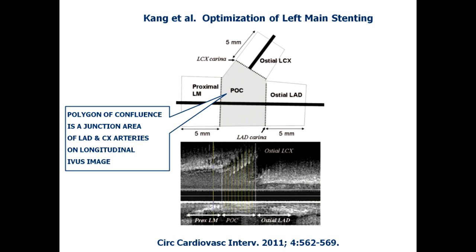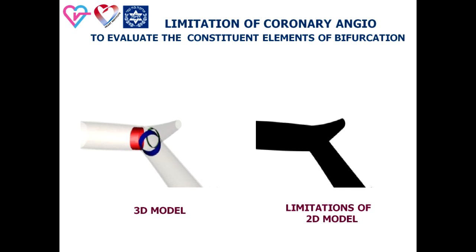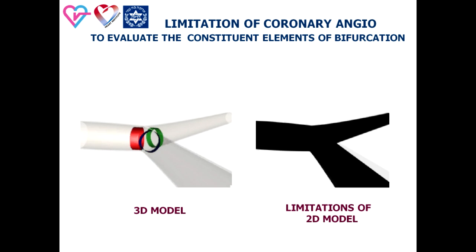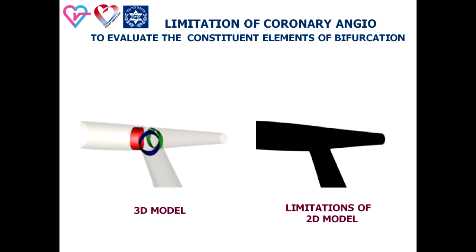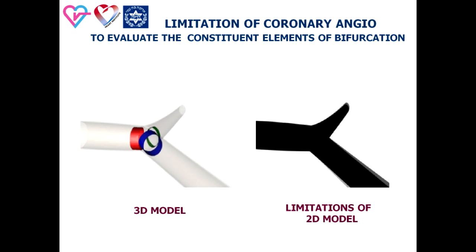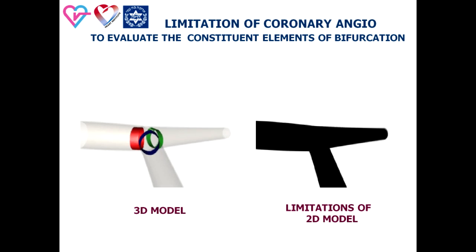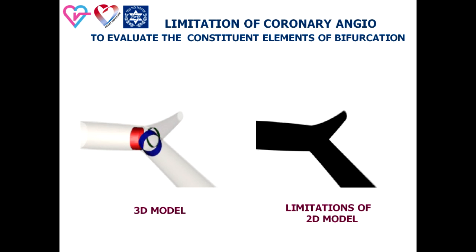The polygon of confluence is an anatomical area including the bifurcation of the distal left main and the branch osteo-segments of the arising main branches. This area is a complex geometrical space that can only be partially evaluated by angiography and IVUS. In the cath lab in real life, we work with 2D imaging, evaluating coronary vessels by analysis of shadows of the coronary tree. 2D imaging has well-known limitations for evaluation of the confluence zone by angiography.